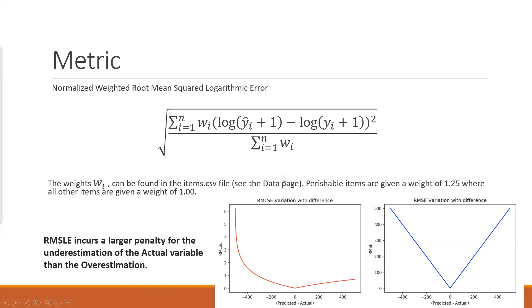Articles discussing this metric note that it incurs a larger penalty for underestimation than overestimation. For example, if we fix the true value Y at 500 and vary Y-hat from 100 to 900, you can see that if Y-hat underestimates a lot, the error increases greatly. But if you overestimate, the error doesn't increase as much. So the metric really focuses on penalizing underestimation.